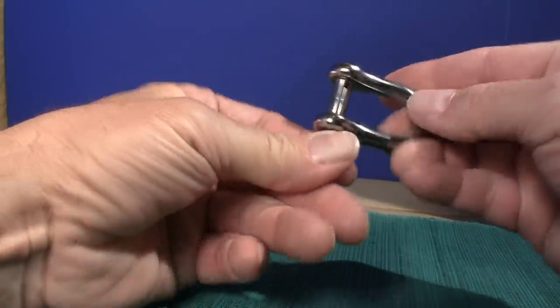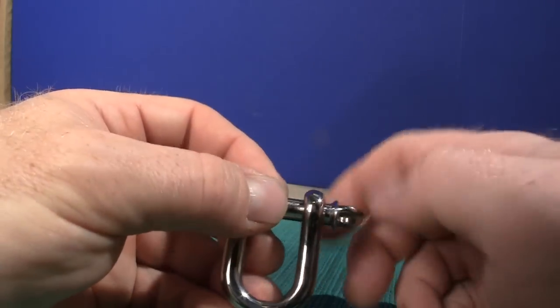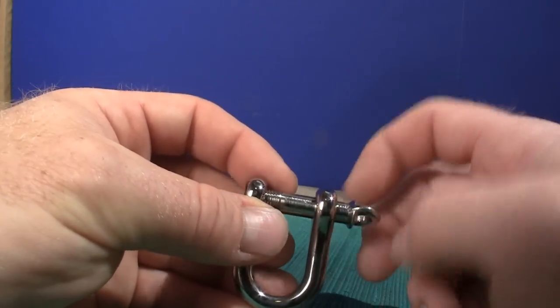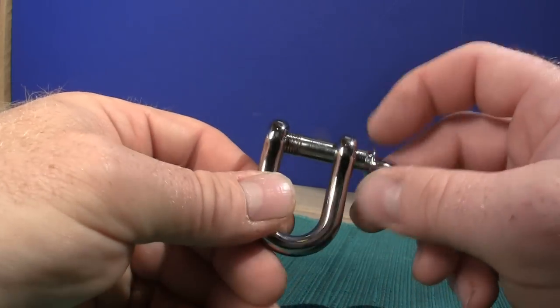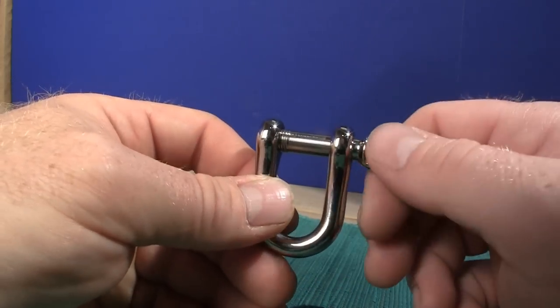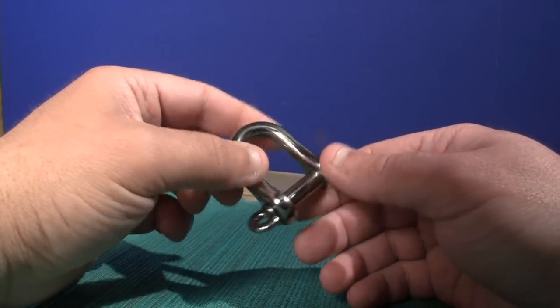This is a D shackle, so called because it looks like a D. This particular shackle has a breaking strength of over 8,000 pounds, giving it a safe workload of right around 4,000 pounds. Now a little bit more about the titanium itself.